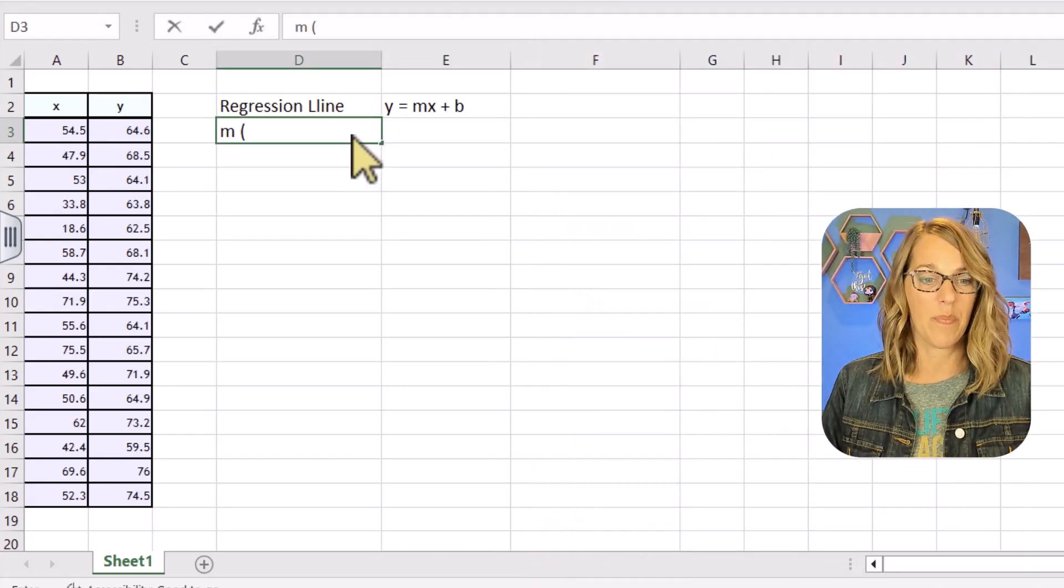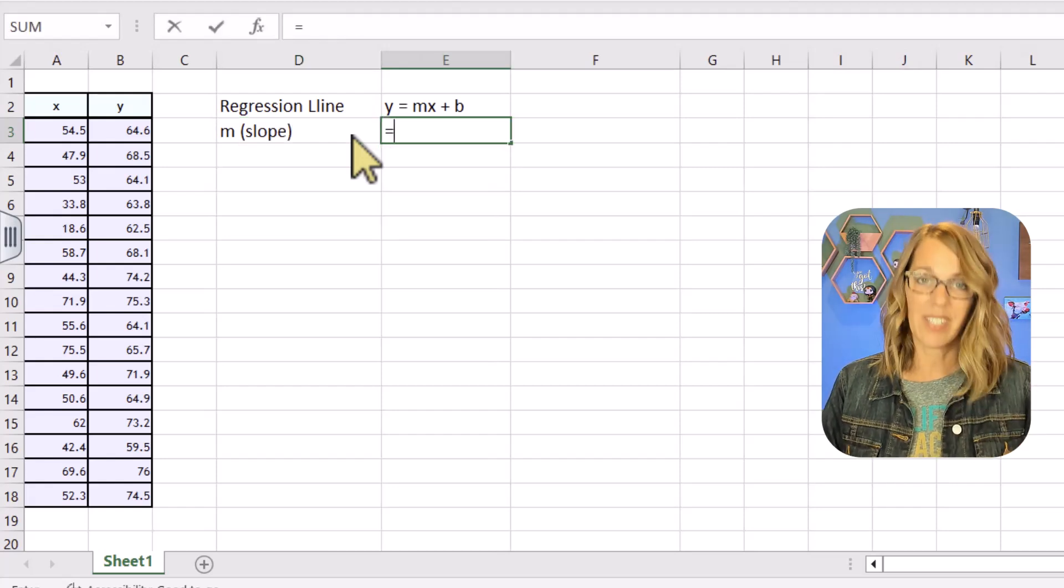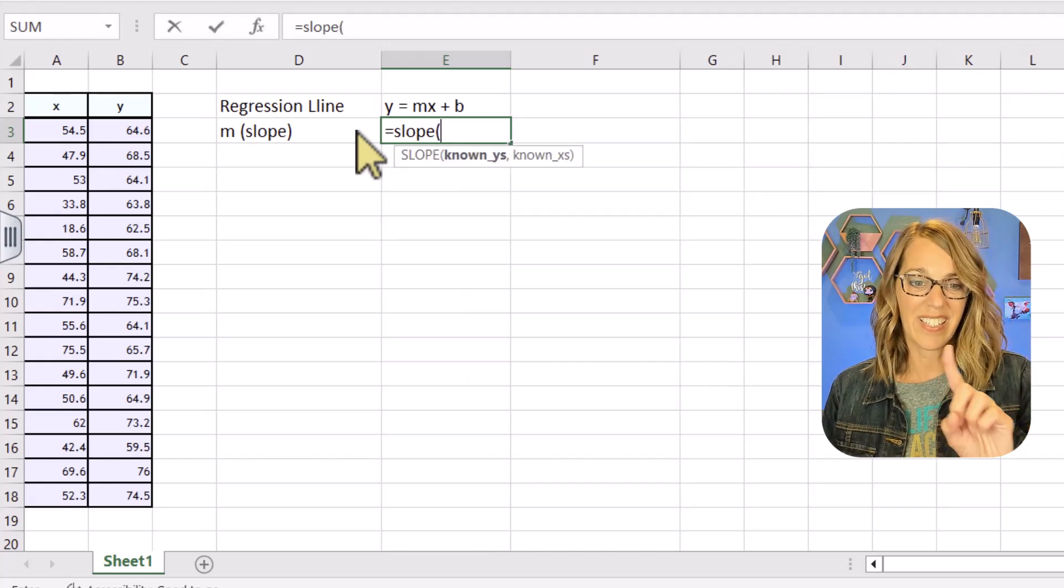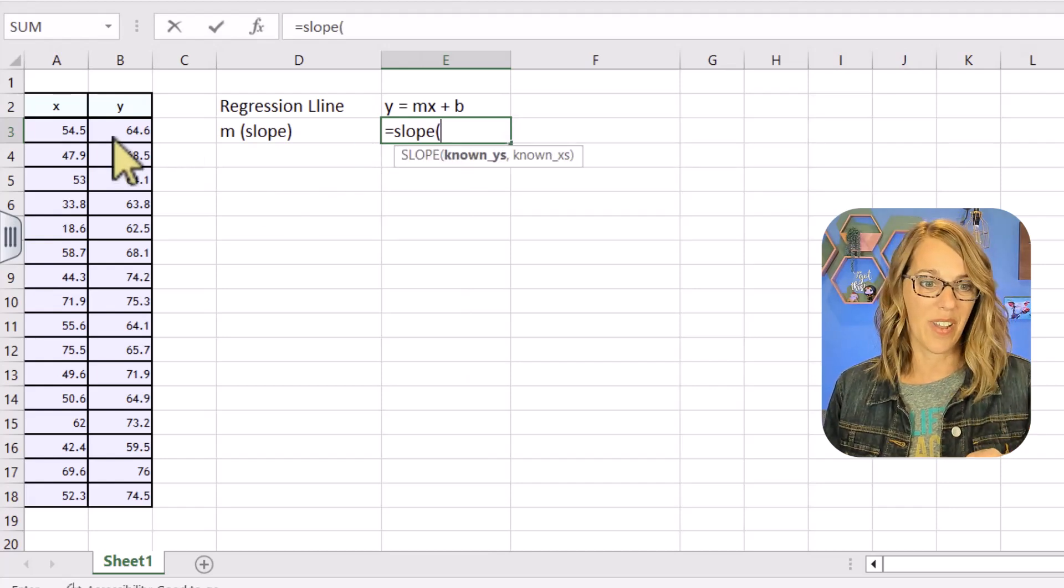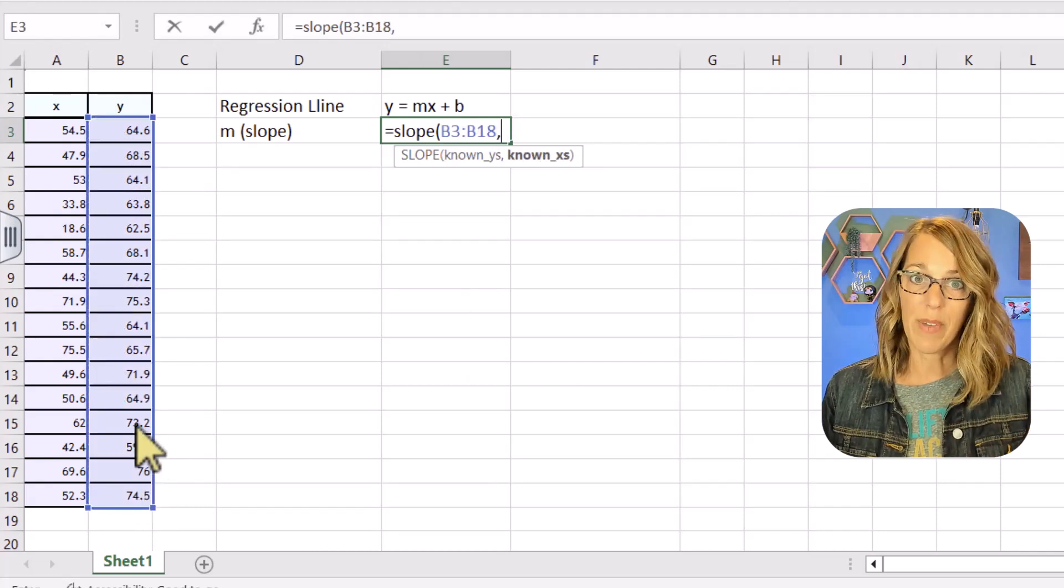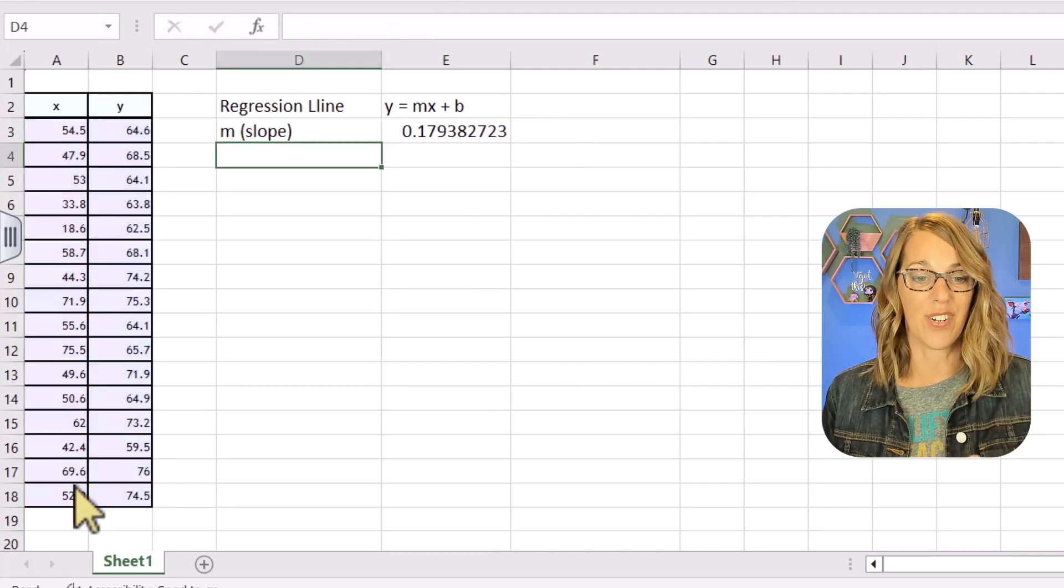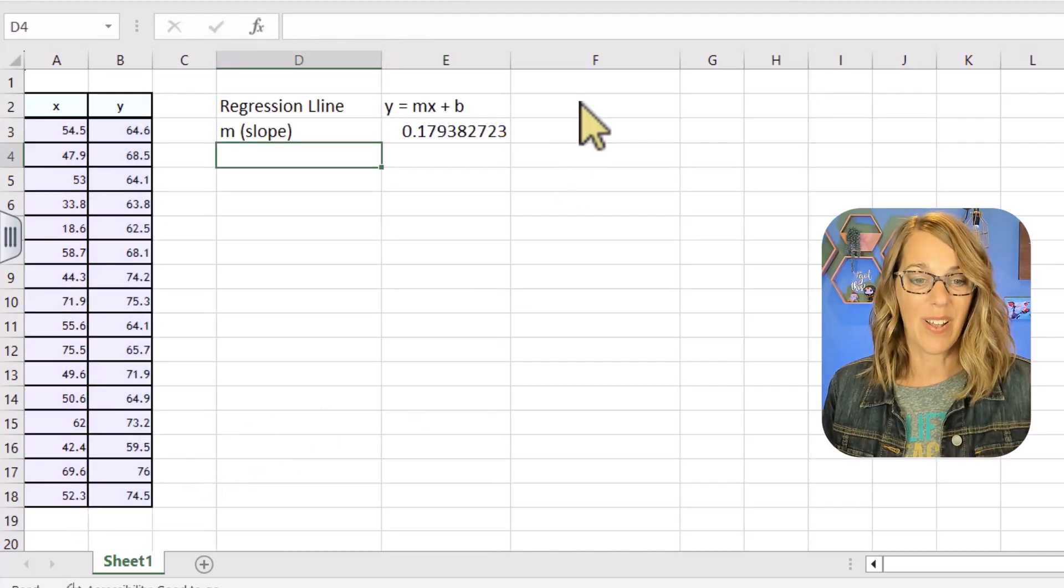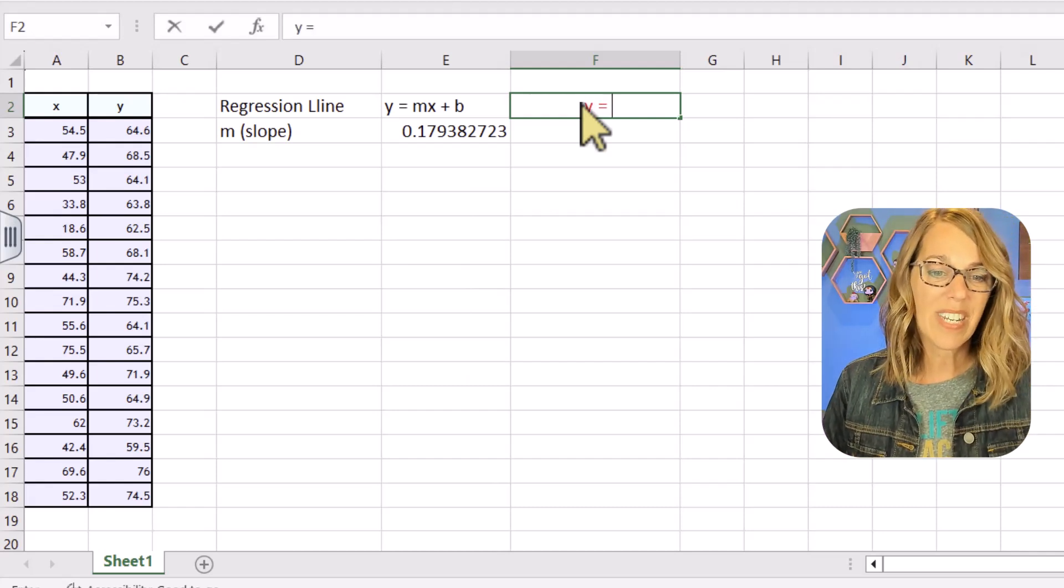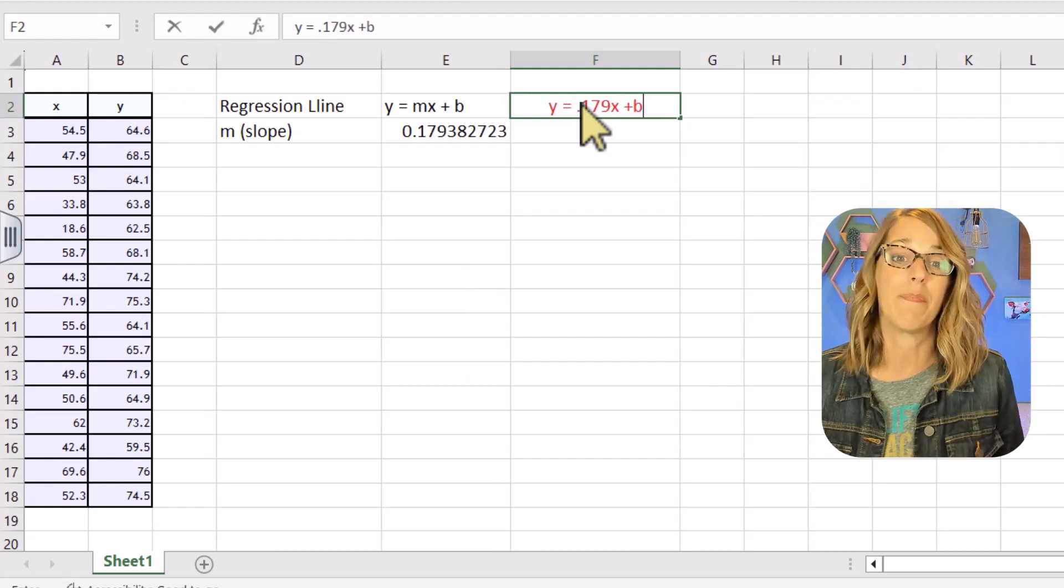I'm going to start by finding m my slope. So to find that slope you're going to go to an empty cell and you're just going to hit equals slope. You're going to call up that slope function and then parenthesis and it says give me your known y's first. Okay they're over here. I'm just going to click hold and drag through the y values followed by a comma and then it wants my x's. So click hold and drag through my x's and then hit enter. This is my slope. Let's go ahead and put this into our equation so far. Y is equal to 0.1793. Let's call that 0.179x and I'm still looking for that b value.